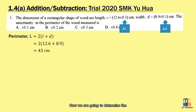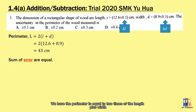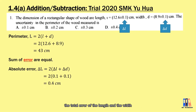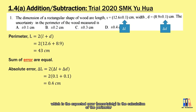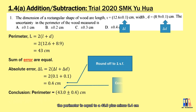Now we are going to determine the uncertainty or the error of the perimeter, which is equal to the sum of the errors in the primary data based on the formula. The perimeter is equal to two times the length plus the width, so the absolute error is also equal to two times the total error of the length and the width. We multiply 2 × (0.1 + 0.1), which gives 0.4 cm — the expected error in the perimeter. Remember to round off the error to one significant figure. The perimeter can be expressed as 43.0 ± 0.4 cm.